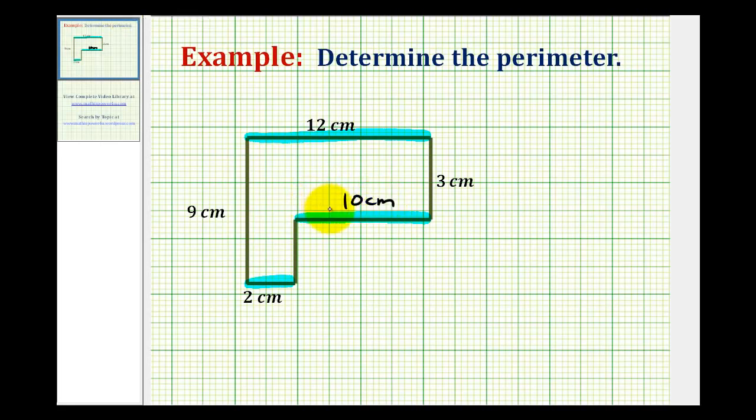And now we can use the same type of analysis to determine the length of this side here. If this side has a length of 9 centimeters, it must be the same length as the sum of the length of this missing side and this length here, which is 3 centimeters. So if this is 9 centimeters and this is 3 centimeters, this side here must have a length of 6 centimeters.